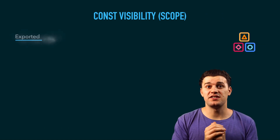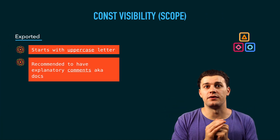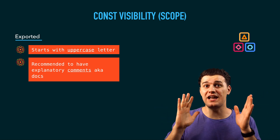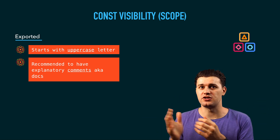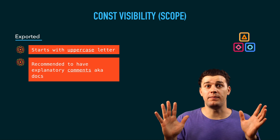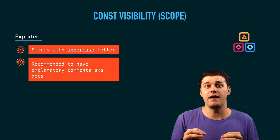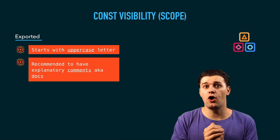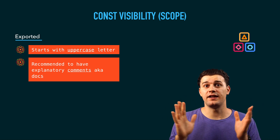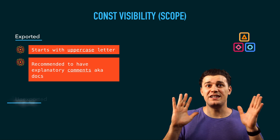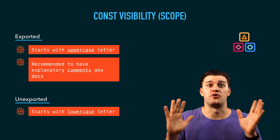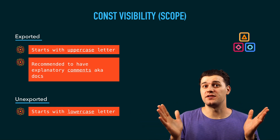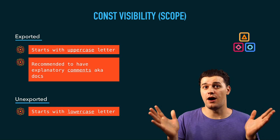Because Go code is organized in packages, another important aspect is visibility or scope. It's very important how you name your constants — if you don't name them properly, you won't be able to use them in other packages. There is a convention in Go: anything that starts with an uppercase letter is exported; anything else is unexported or private. You don't need syntax like private, public, or protected. You just need to uppercase your symbol — your constant — and that's it. You can use that symbol in another package.